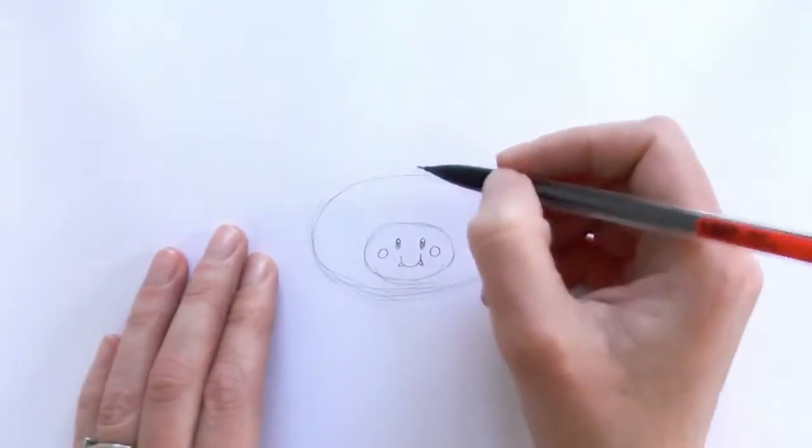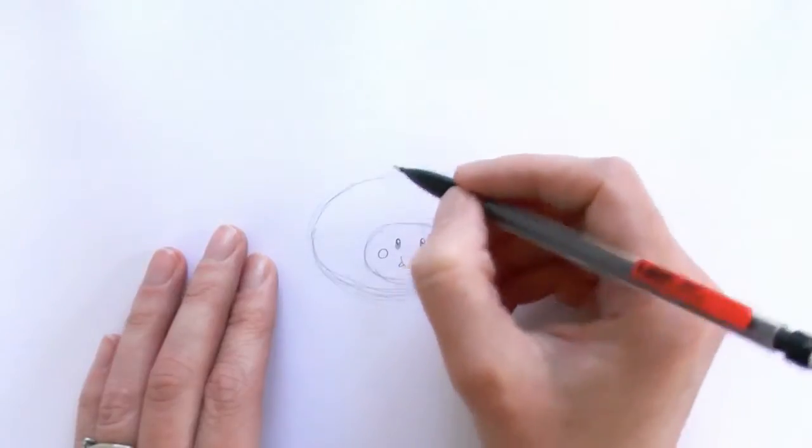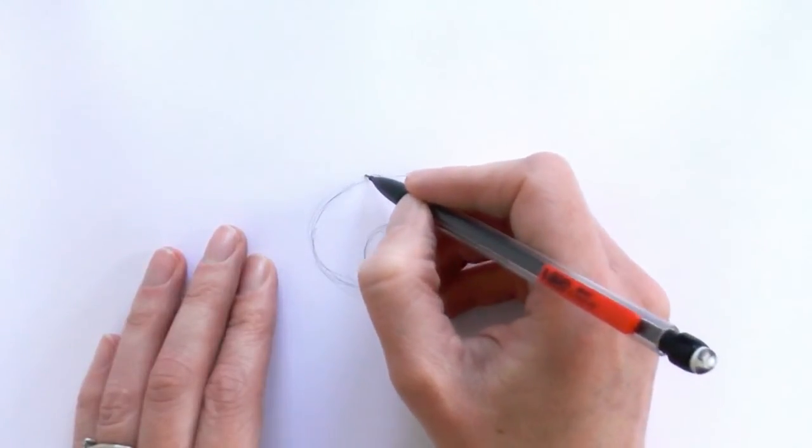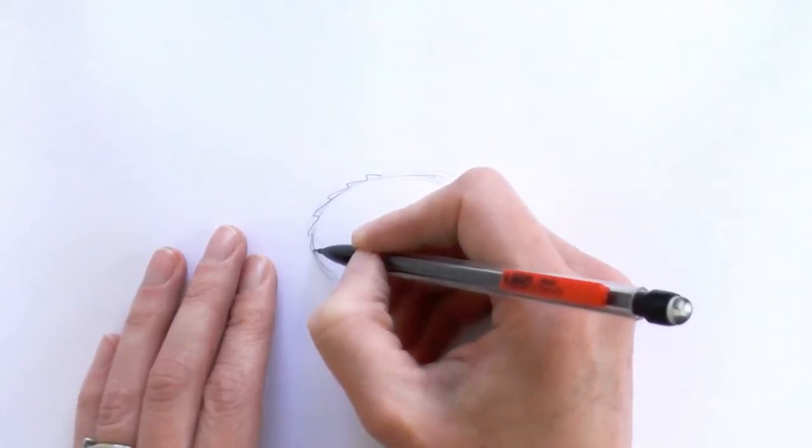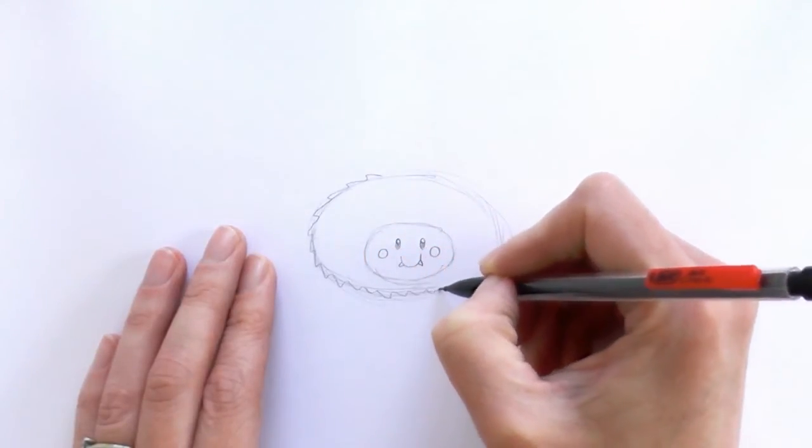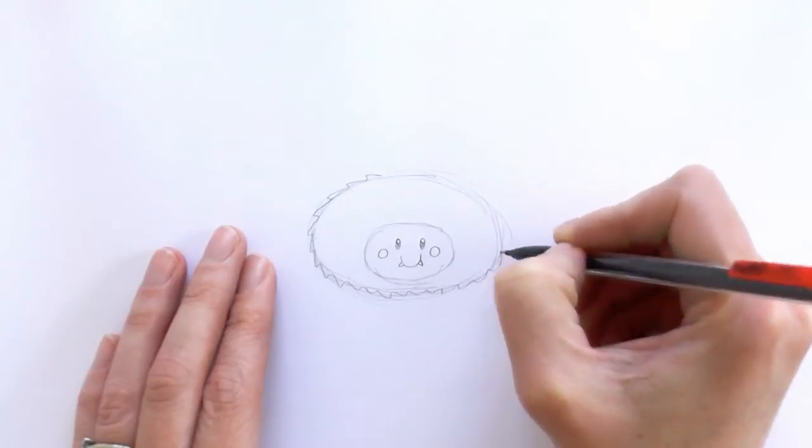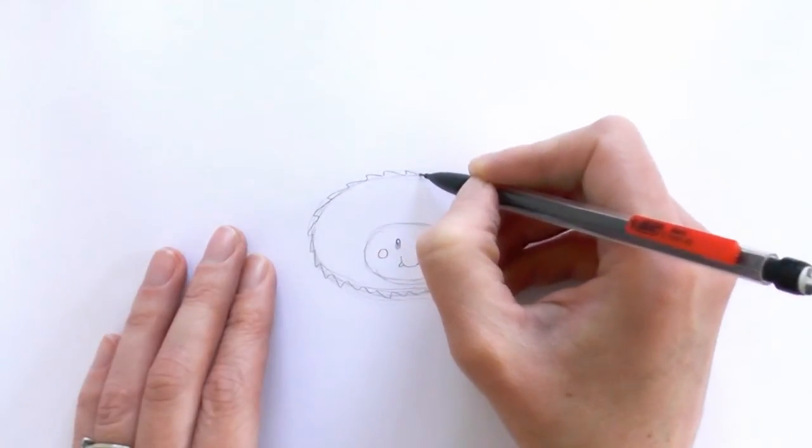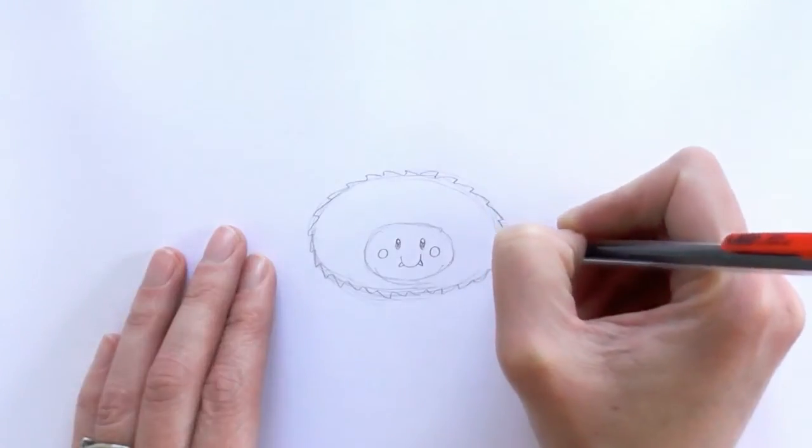Now we're going to give our little spider a bit of texture, he's a bit of a furry spider, so we do that by just adding kind of a little wave type pattern around the outer oval. Then we turn and kind of bring them back in the other direction.